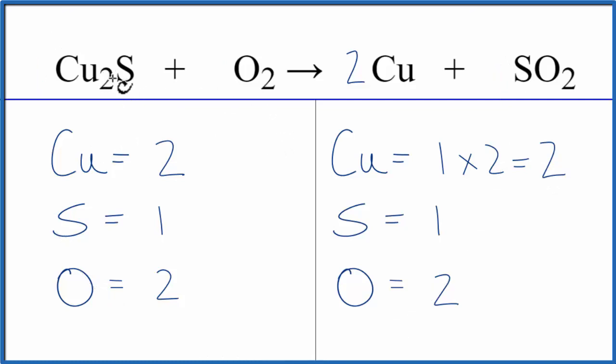What you can't change are these small numbers. These are called the subscripts, and you cannot change those when balancing chemical equations.